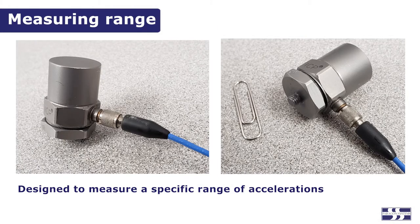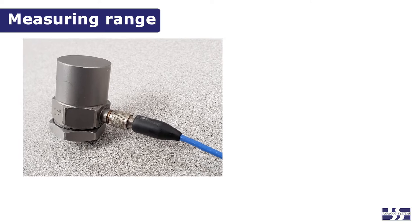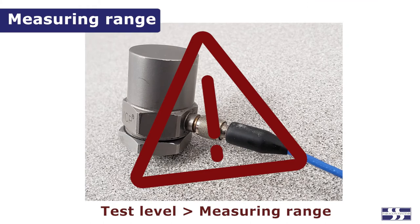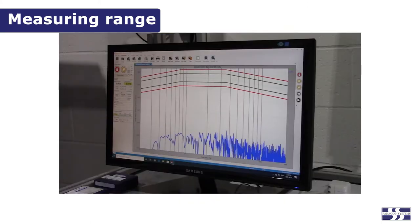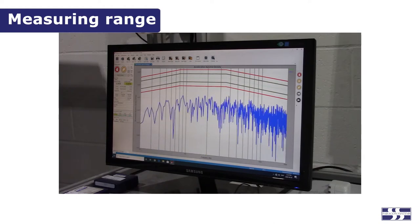Accelerometers are designed to measure a specific range of accelerations. Because of this, two things should be considered when selecting the appropriate one. An accelerometer can be permanently damaged if the test level exceeds the maximum measuring range. This can be prevented by using an accelerometer with a larger measuring range.